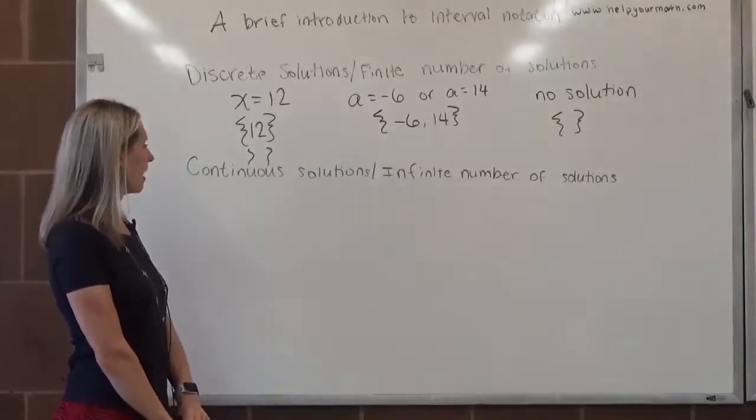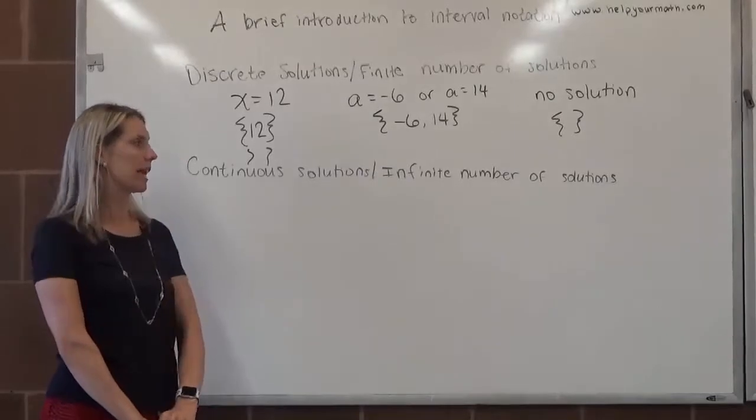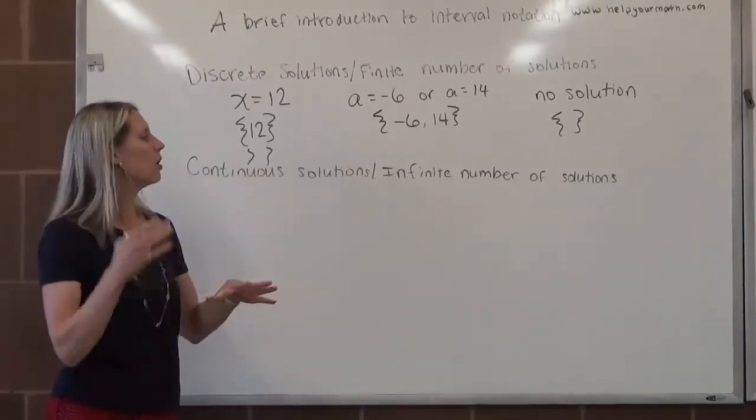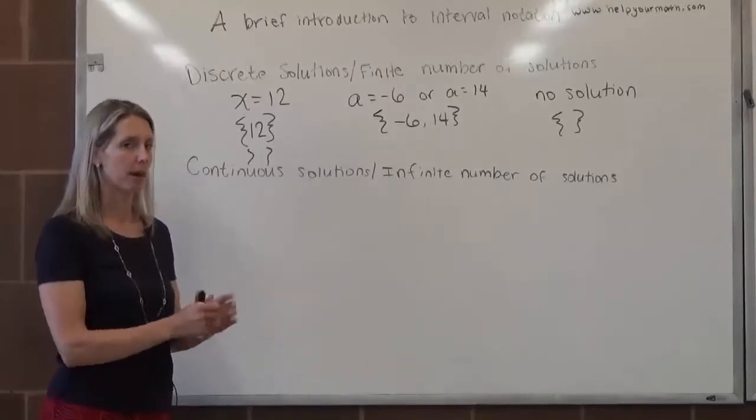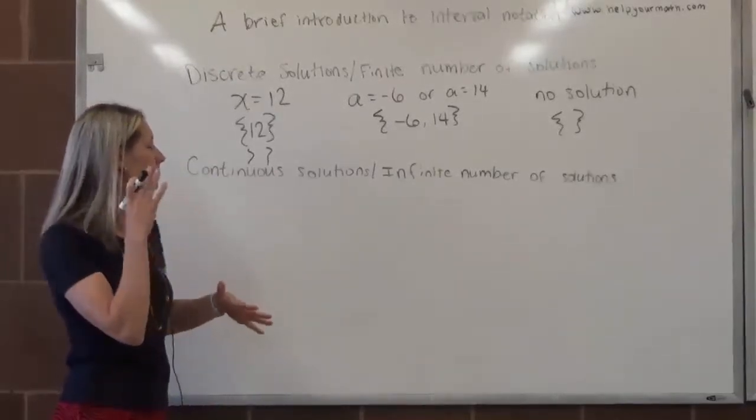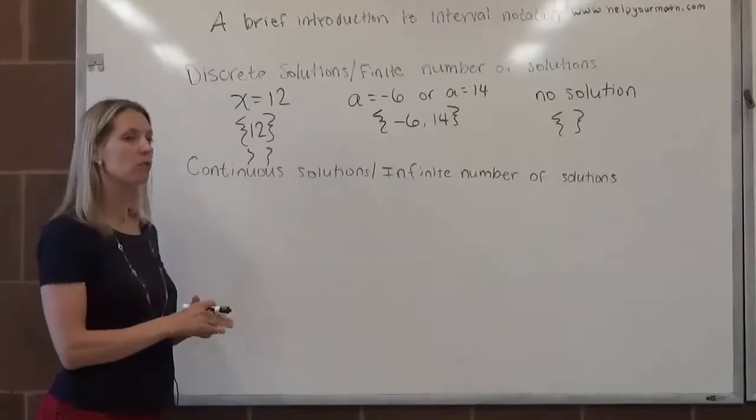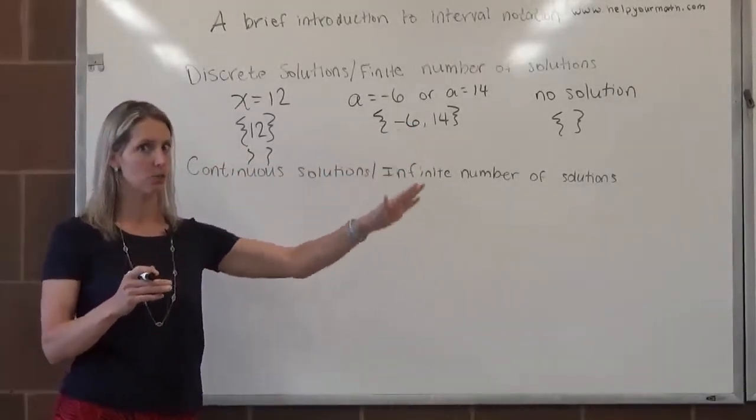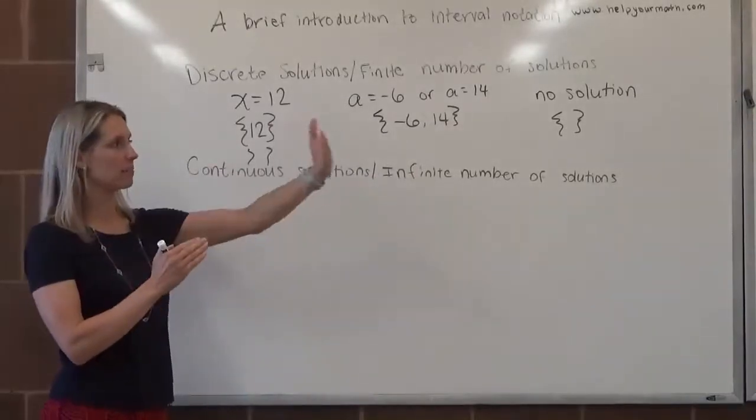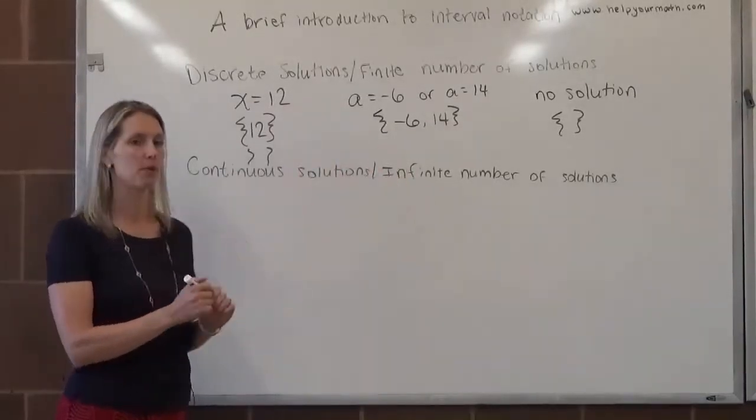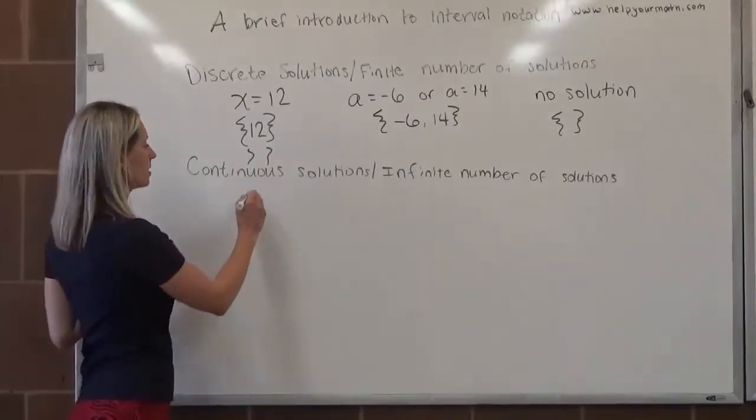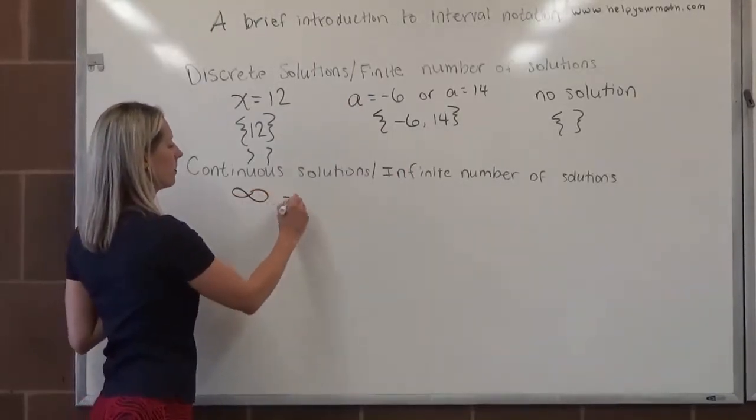The other option is we could have a continuous solution set or infinite number of solutions. Before we talk about what these look like, there is some notation to discuss. Sometimes when we're looking at continuous solutions, the solutions get bigger and bigger and there is no biggest solution. If the numbers keep going and we want to say the solutions are approaching infinity, we use the infinity sign to represent numbers approaching infinity.